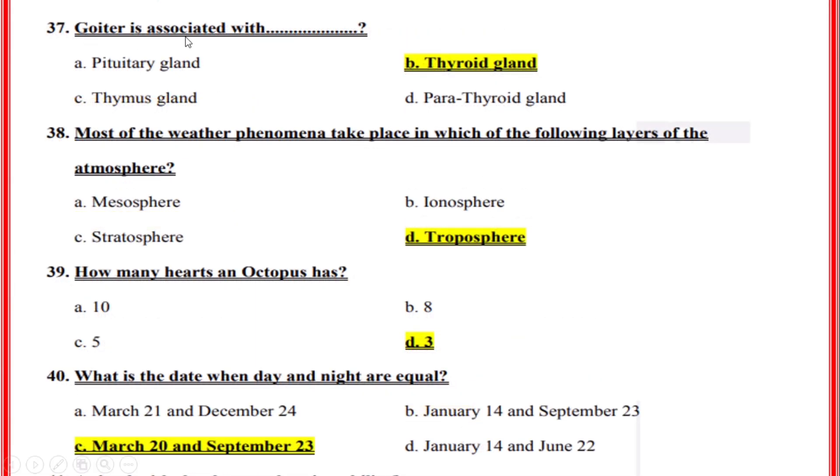Goiter is associated with? Correct option: B, Thyroid gland.